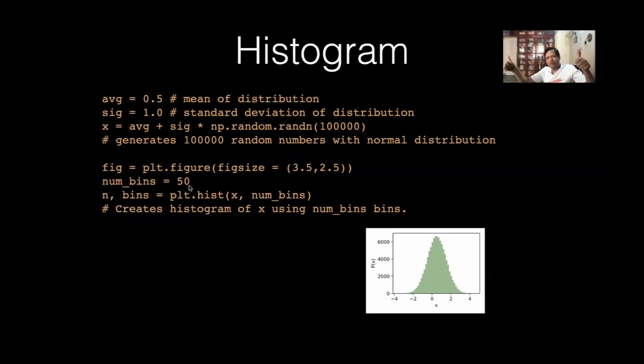So, it from x bin to x max is going to just divide into 50 bins and then it will plot. So, plt.hist. So, this will create the histogram. Okay.